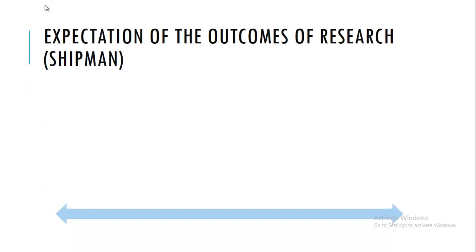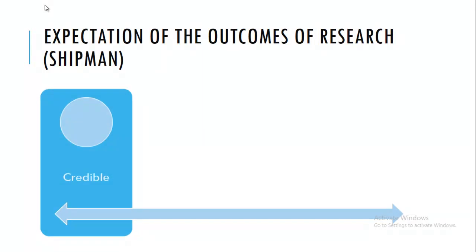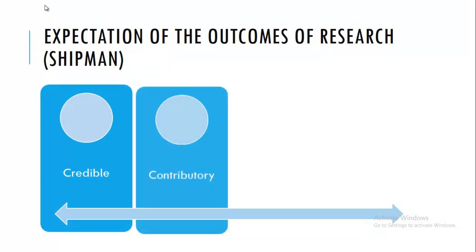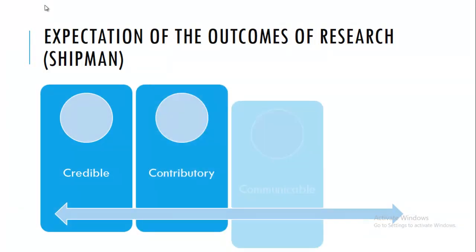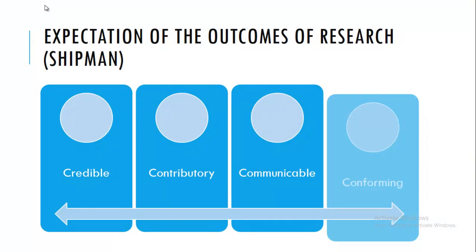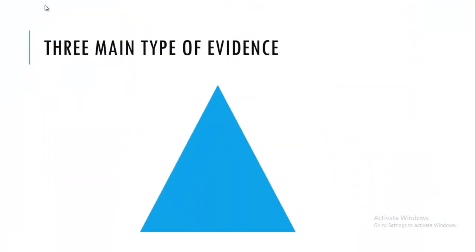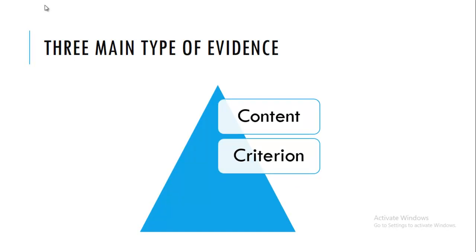Expectation of the outcomes of research by Shipman: Credible, Contributory, Communicable, and Conforming. Three main types of evidence: Content — the meaning it conveys or the logic; Criterion — the syntax being set; and Construct — the morphology or structure.